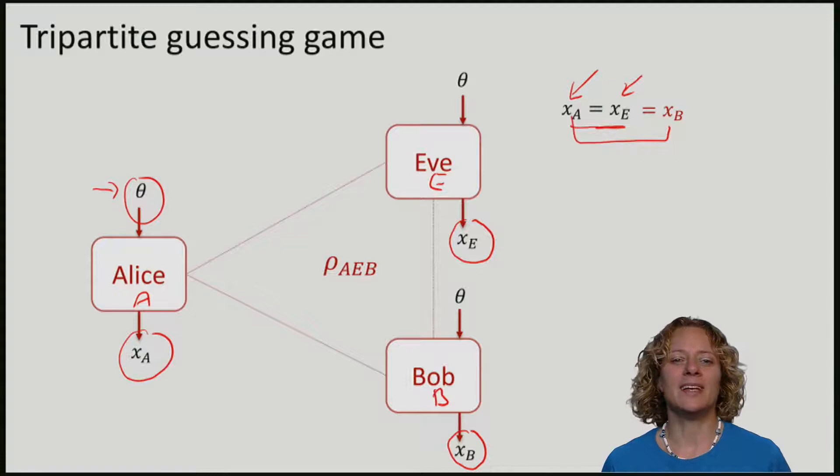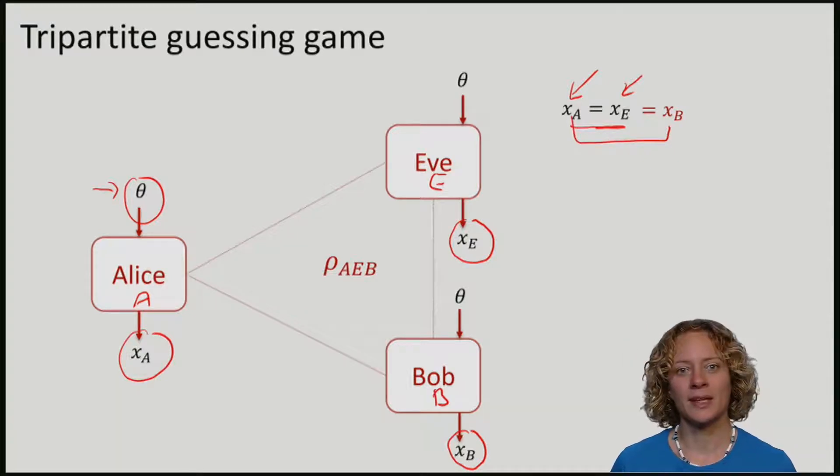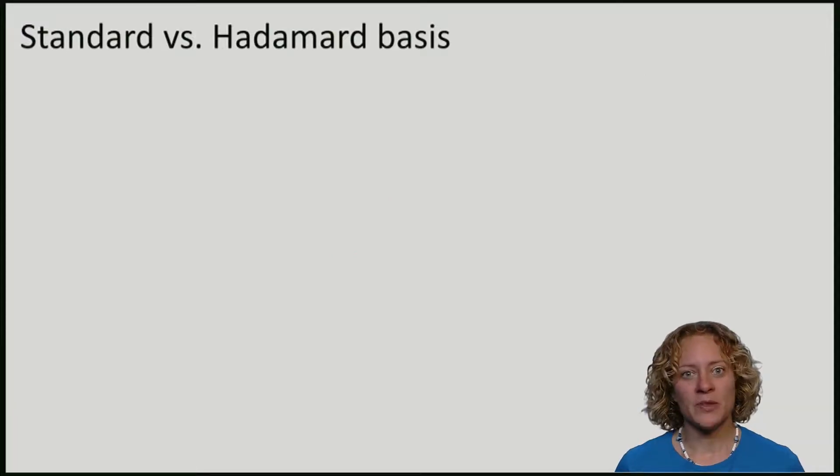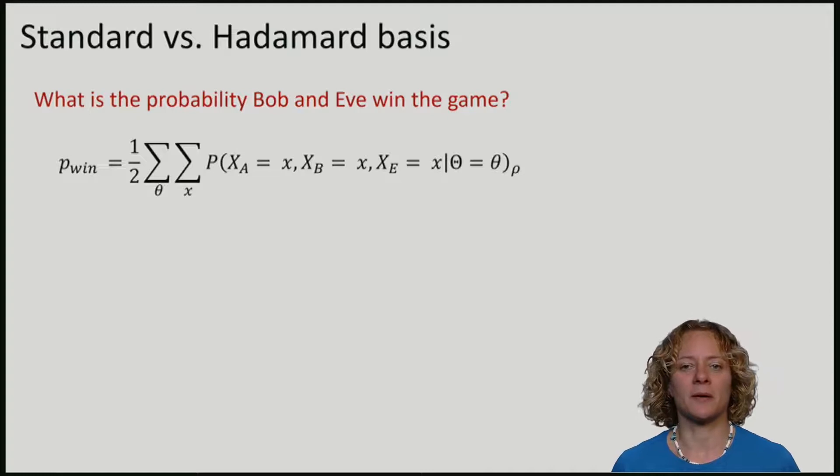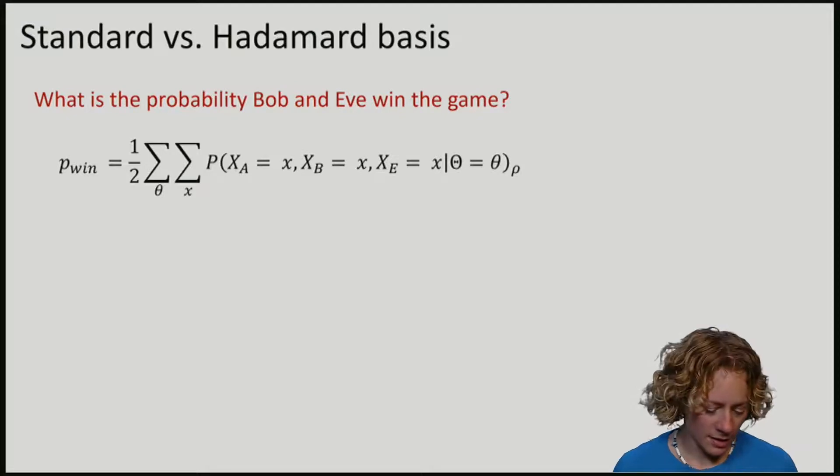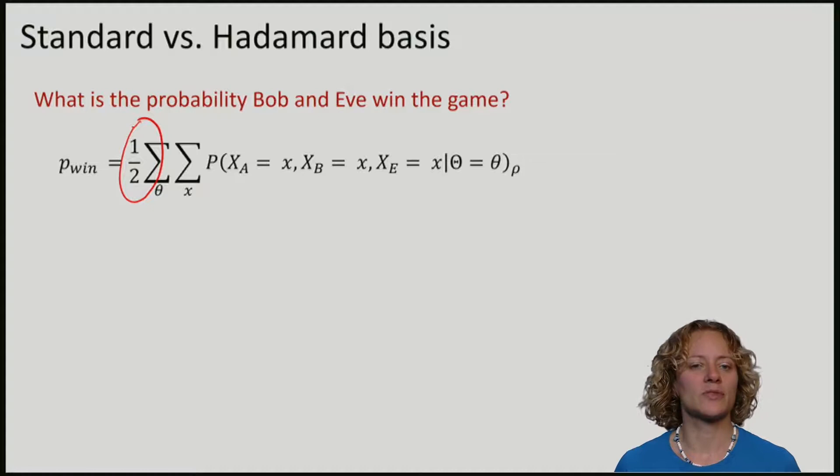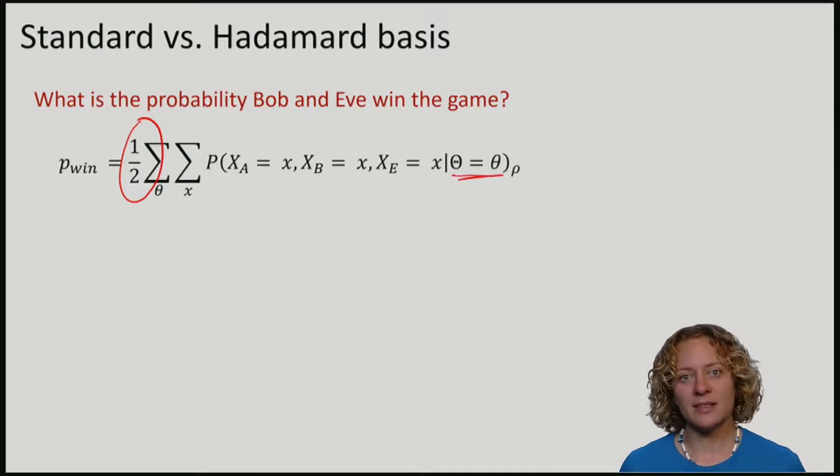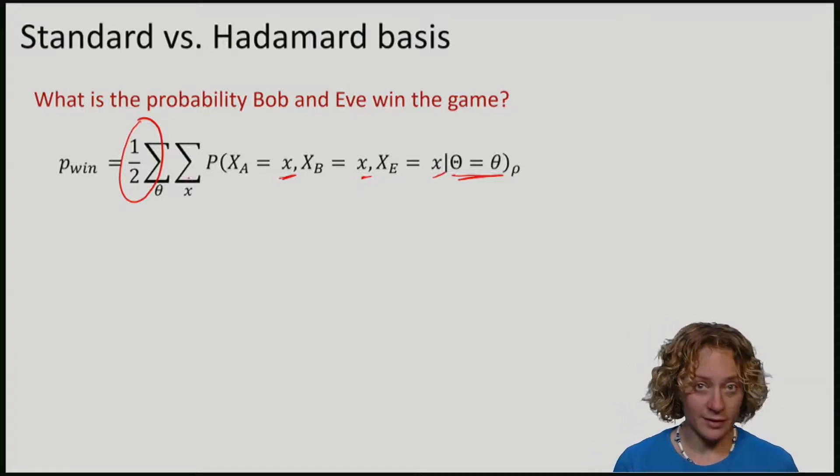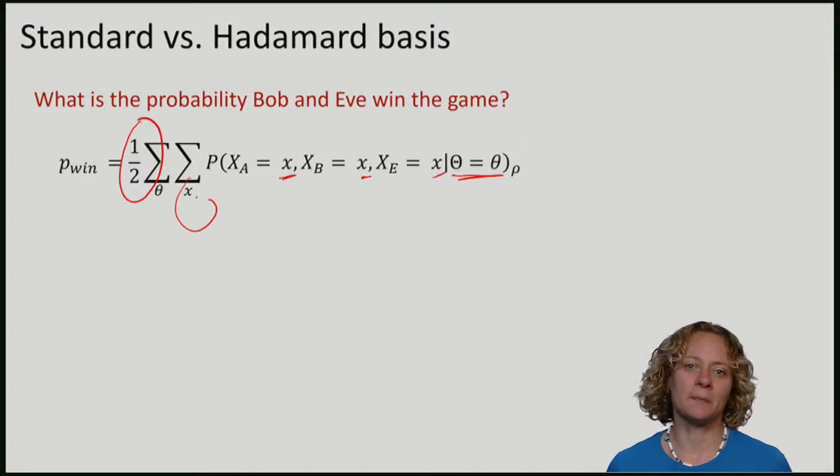So what is the probability that Eve and Bob win the game? That is to say, what is the probability that they all produce the same outcome? We can express this probability as follows. We average over the choice of basis, so the half comes from the fact that Alice chooses with equal probability to measure in the standard basis or in the Hadamard basis. And then given a certain basis, there is some probability that they all produce the same answer x. We actually don't care what that answer is, which is why we sum over x. We just care that they are the same.